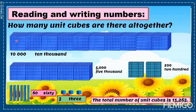Let us count: 1,000, 2,000, 3,000, 4,000, 5,000, 6,000, 7,000, 8,000, 9,000, and 10,000. So the total of this one is 10,000. The word form of 10,000 is this one, and its numeral form is 10,000.